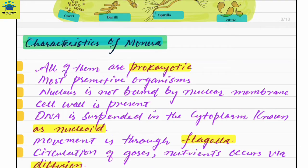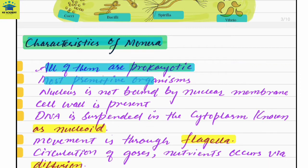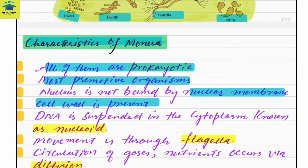The characteristics of Kingdom Monera are: all members are prokaryotic — the most primitive organisms that do not have a well-developed nucleus. The nucleus is not bound by a nuclear membrane, meaning they lack a true nucleus. Cell wall is present; the bacterial cell wall is made up of peptidoglycan. DNA is suspended in the cytoplasm and is known as the nucleoid.